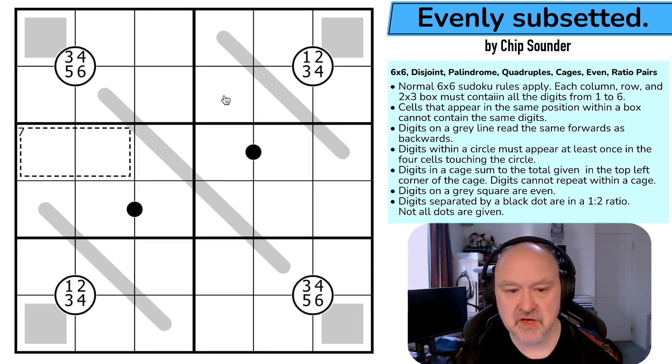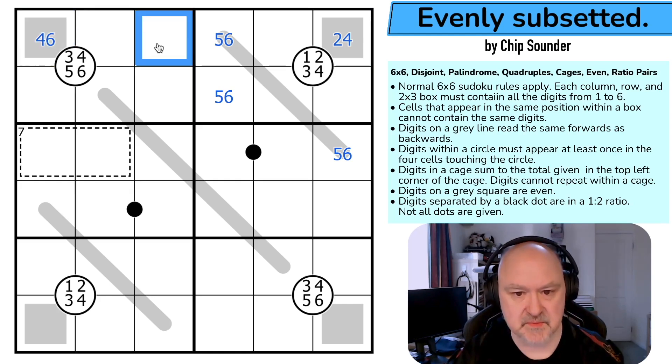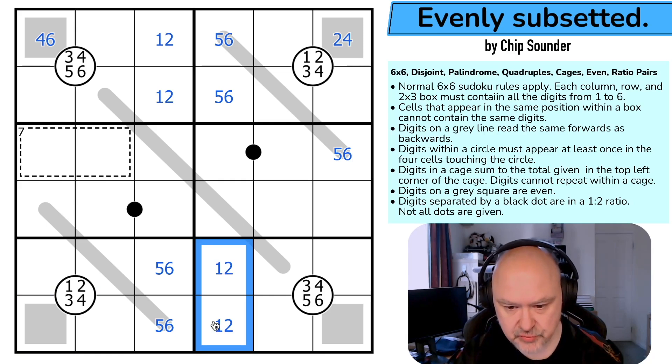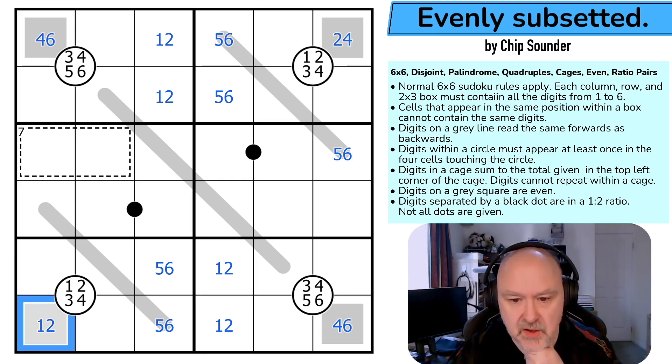Rather than pencil mark this as 1, 2, 3, 4, we probably just want to say these are 5 and 6. This can only be 2 or 4 because it must be even. This can only be 4 or 6 because it must be even. And these are 1 and 2. This must be 5 and 6 because it can't be 1, 2, 3, 4. This must be 1 and 2. This can only be 4 or 6. This can only be 1 or 2.